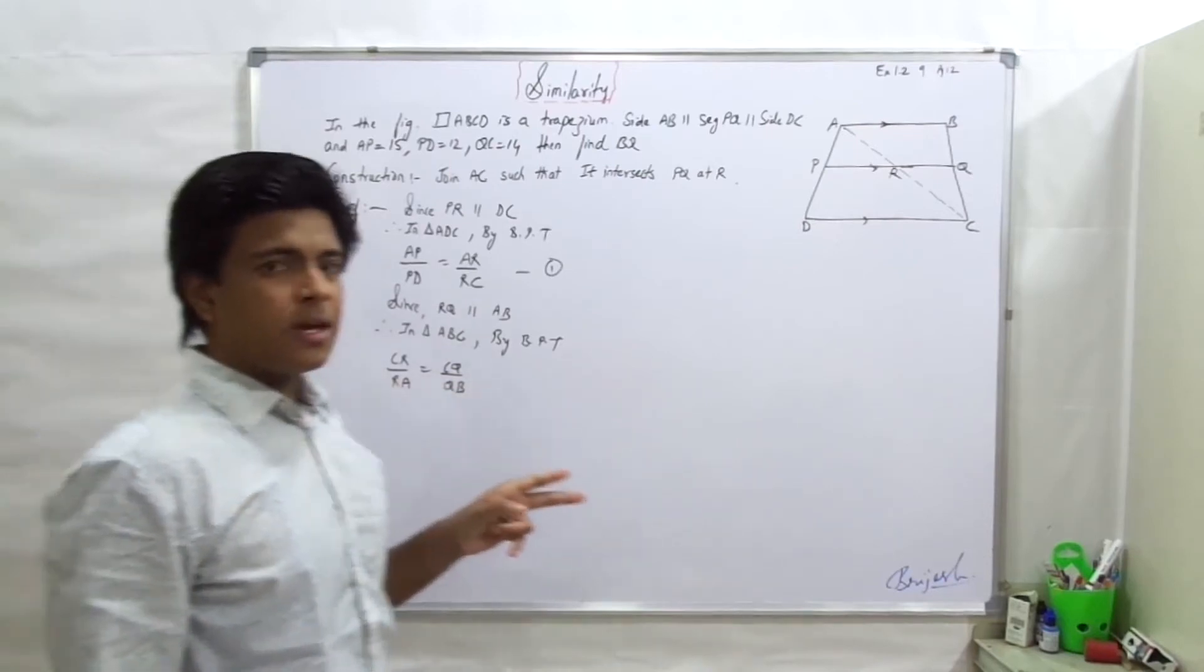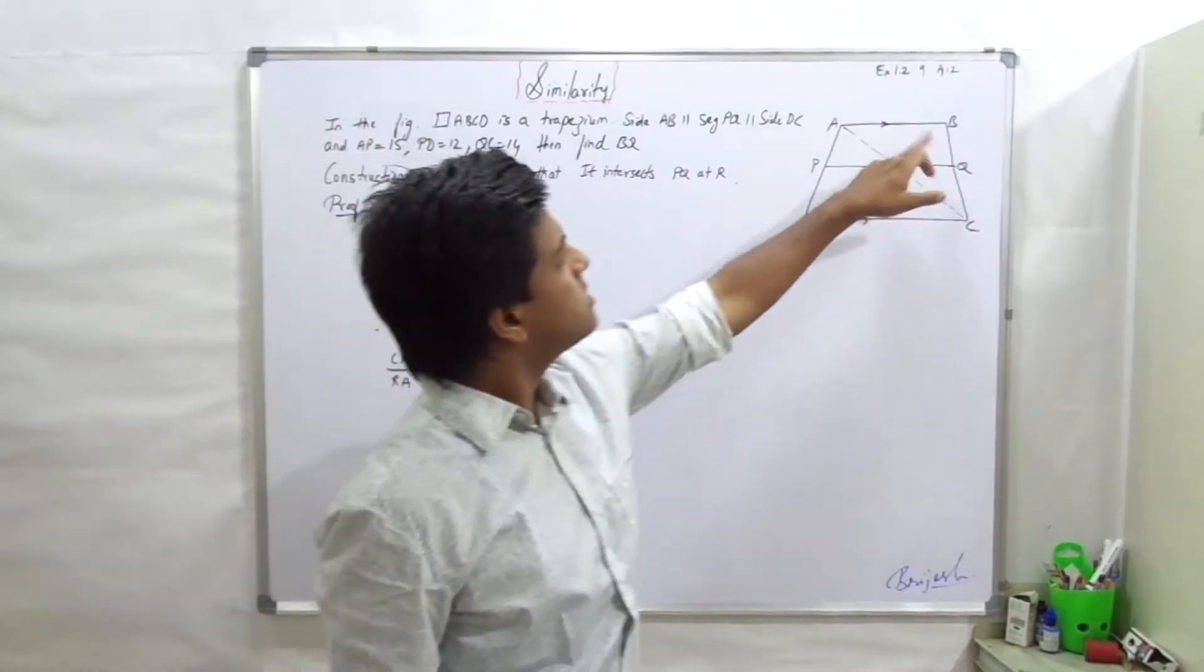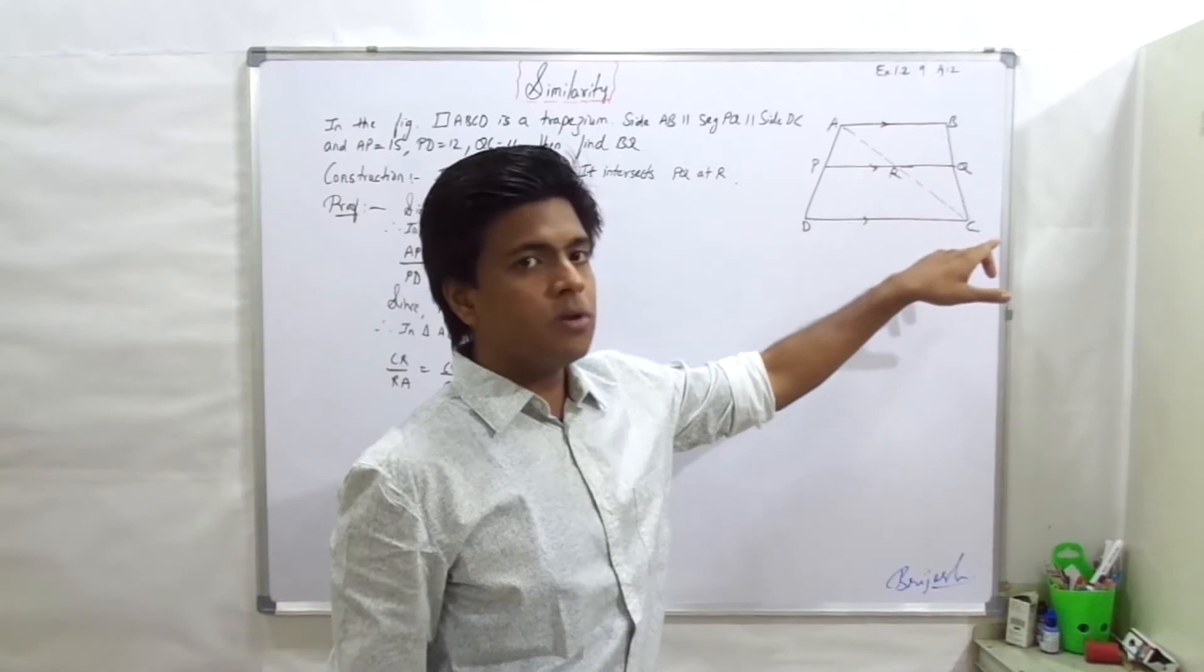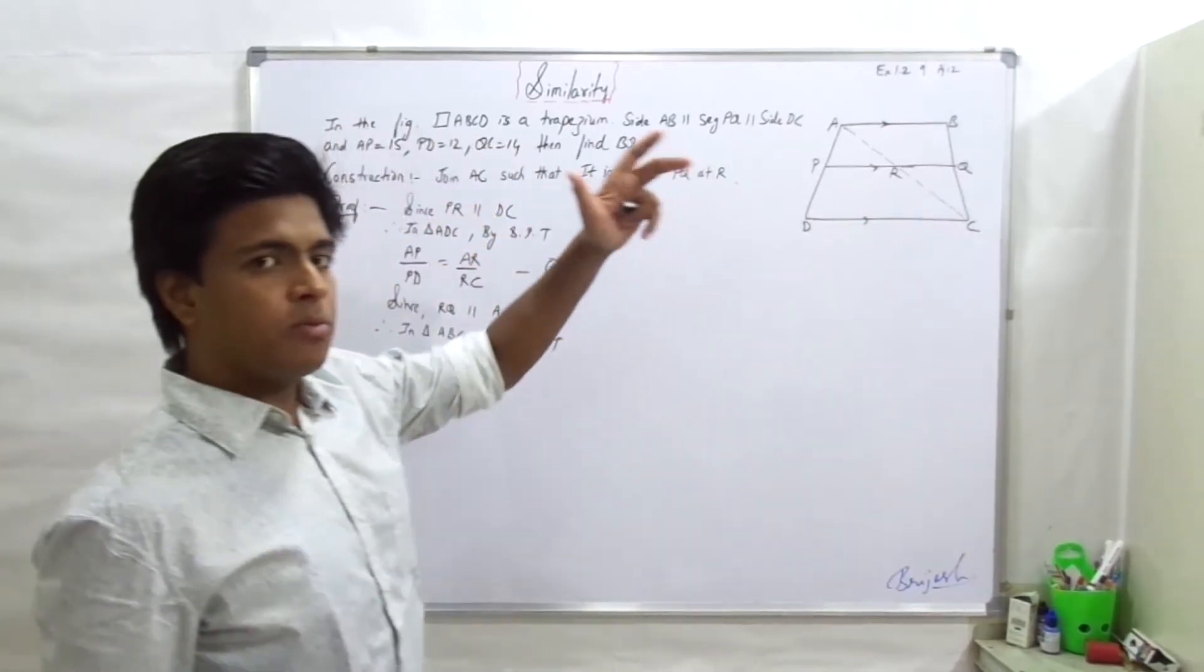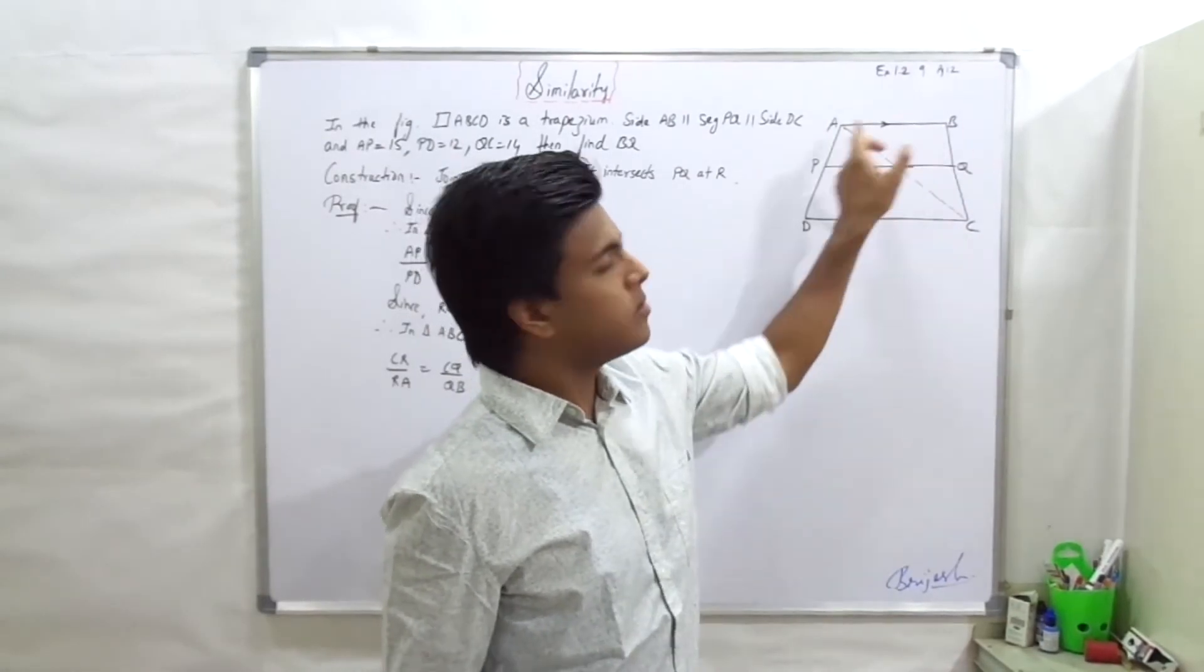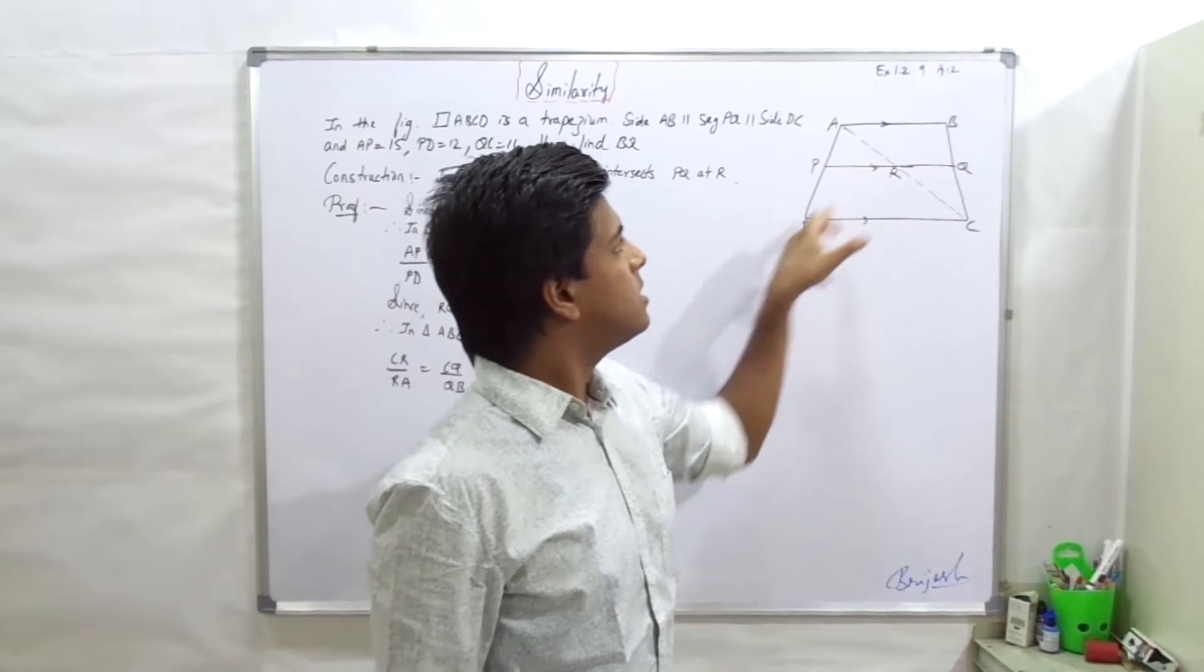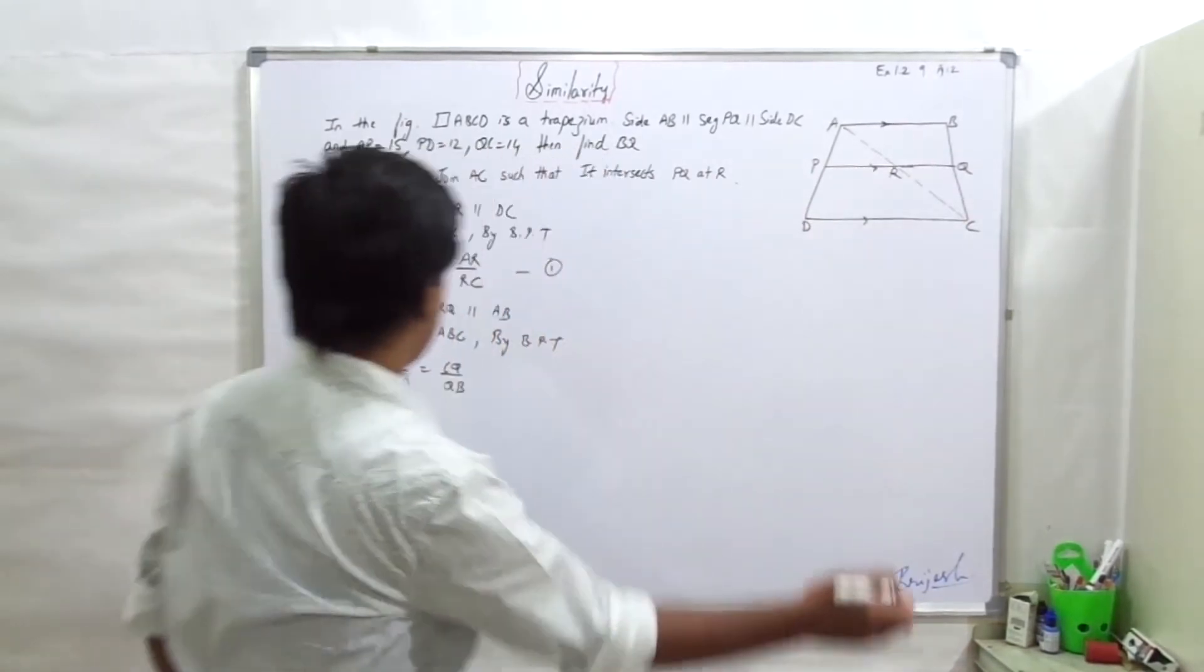You understand what I am doing? Because I am understanding how to get BQ, the ratio of BQ will be the ratio of BQ. Now what I am doing, I am taking this triangle and I am taking this, so the ratio of BQ is the ratio of BQ.